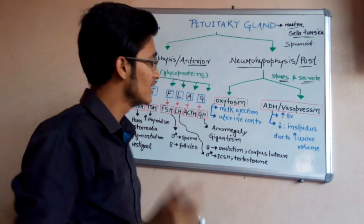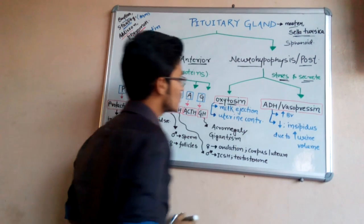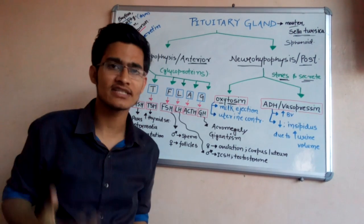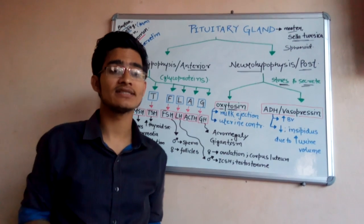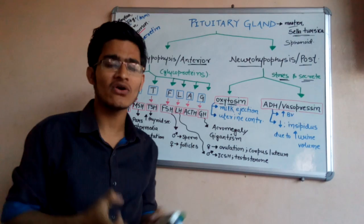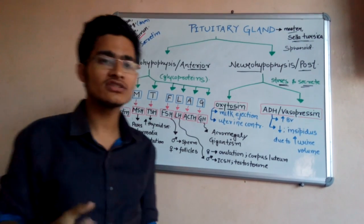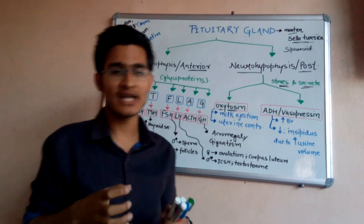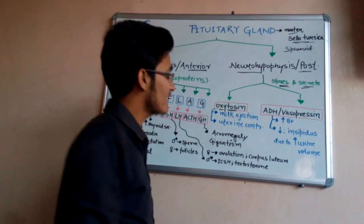The first hormone under neurohypophysis is oxytocin. It stimulates milk ejection from the mammary gland of females and also helps in parturition because it is useful in uterine contraction. So the function of oxytocin is milk ejection as well as uterine contraction during parturition.